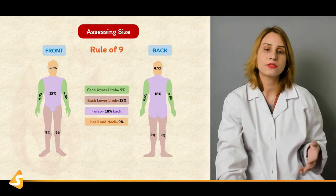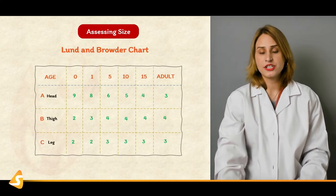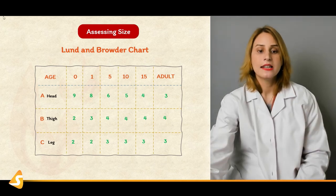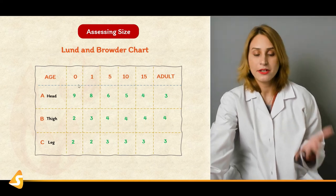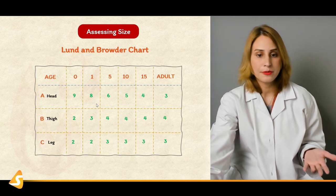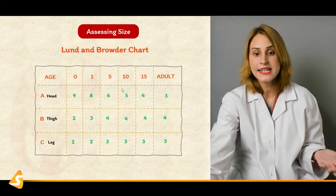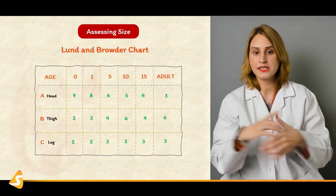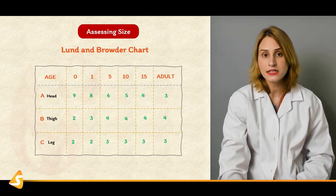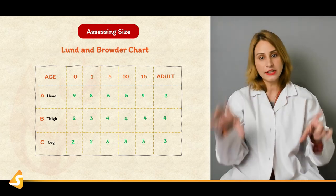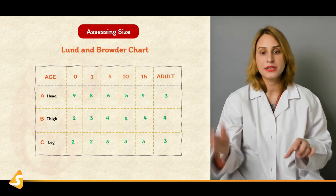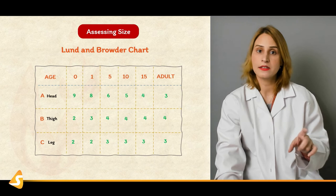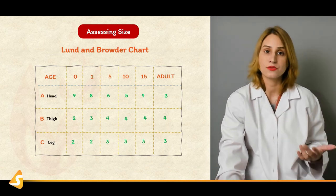There is also the Lund and Browder chart, which is more specific — covering head, thigh, and leg differently by age. For an infant the head is 9%, for a 1-year-old it would be 8%, for a 5-year-old it would be 6%, and for an adult the head would be 3%. But most of the time we don't use the Lund and Browder chart — most of the time we use the Wallace Rule of Nines, which is more practical and easier to calculate. You should know what the Lund and Browder chart is, but you should memorize the Wallace Rule of Nines, which is important for assessing size in clinical practice.